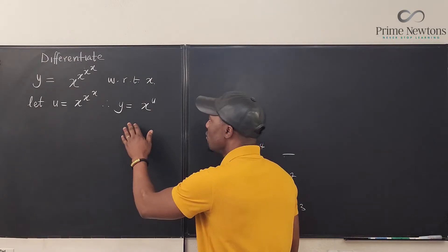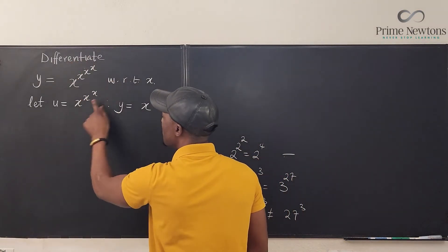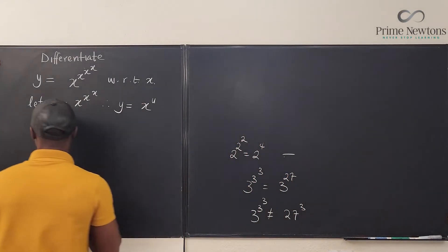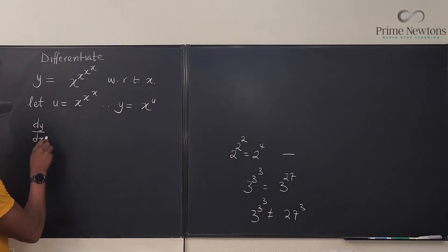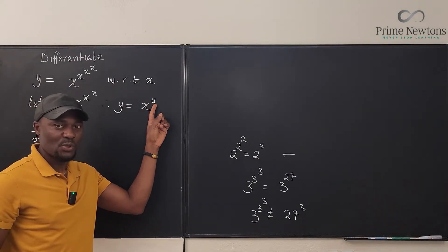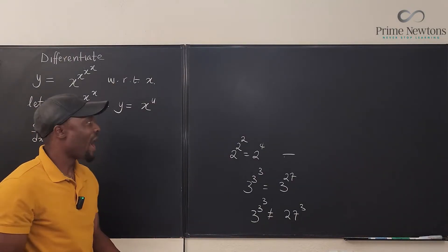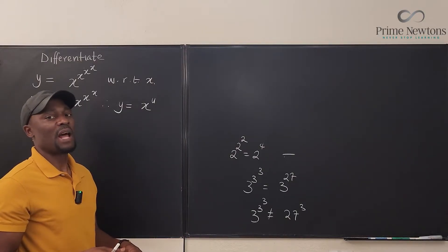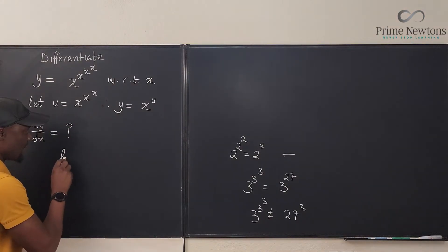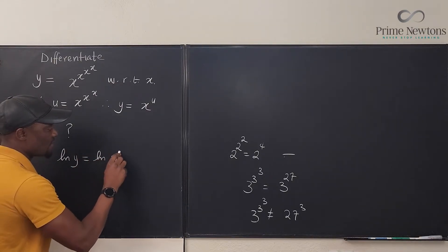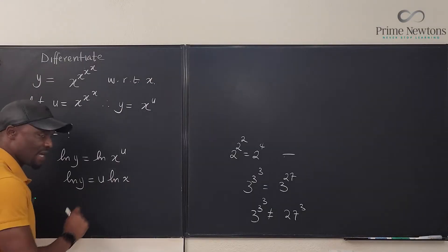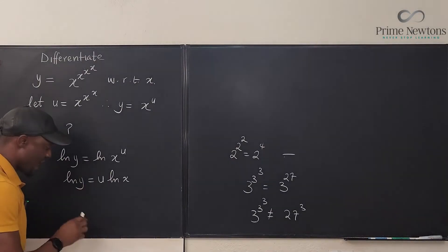So you can see why I did my substitution of the top part as u, so that y equals x to the u. Now I want to differentiate this. Since the exponent is a function of x and not just a number, I can't directly apply the power rule. I have to take logarithms of both sides: the natural log of y equals u times the natural log of x. Now I can differentiate.